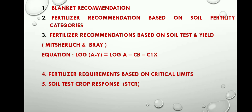Blanket recommendation, also called general recommendation, means applying a recommended dose of fertilizer uniformly. For example, in India farmers are applying for rice: 120 kg of nitrogen, 60 kg of phosphorus, and 40 to 60 kg of potassium. This is the generalized or blanket recommendation. It is generally recommended for high yielding varieties, and there is uniformity in the fertilizer doses and application. This is practiced for economical efficiency.